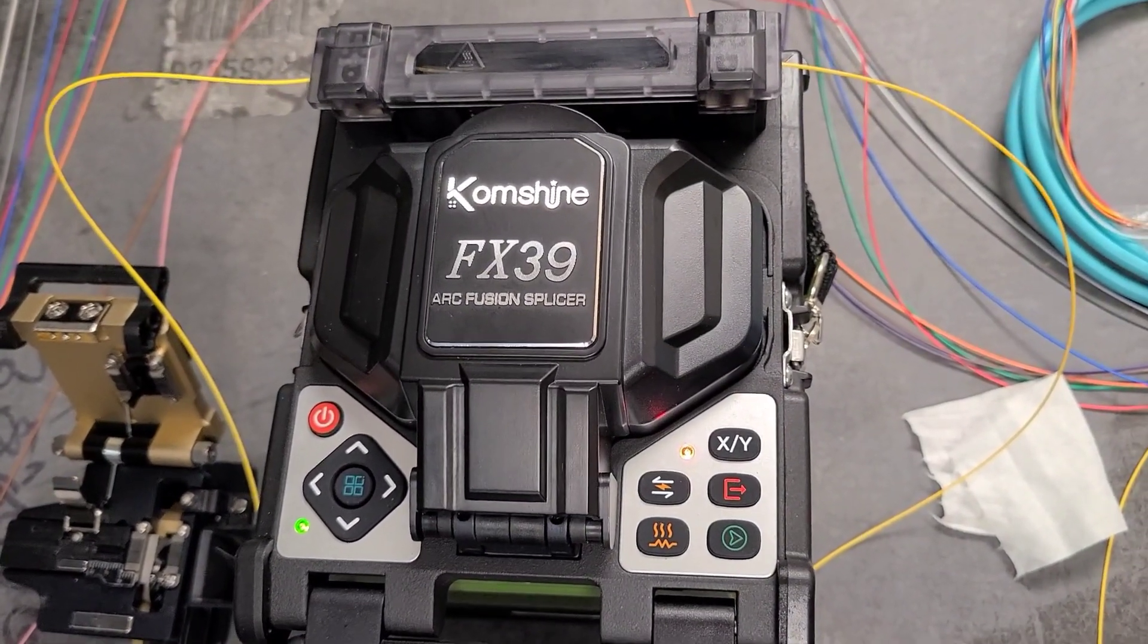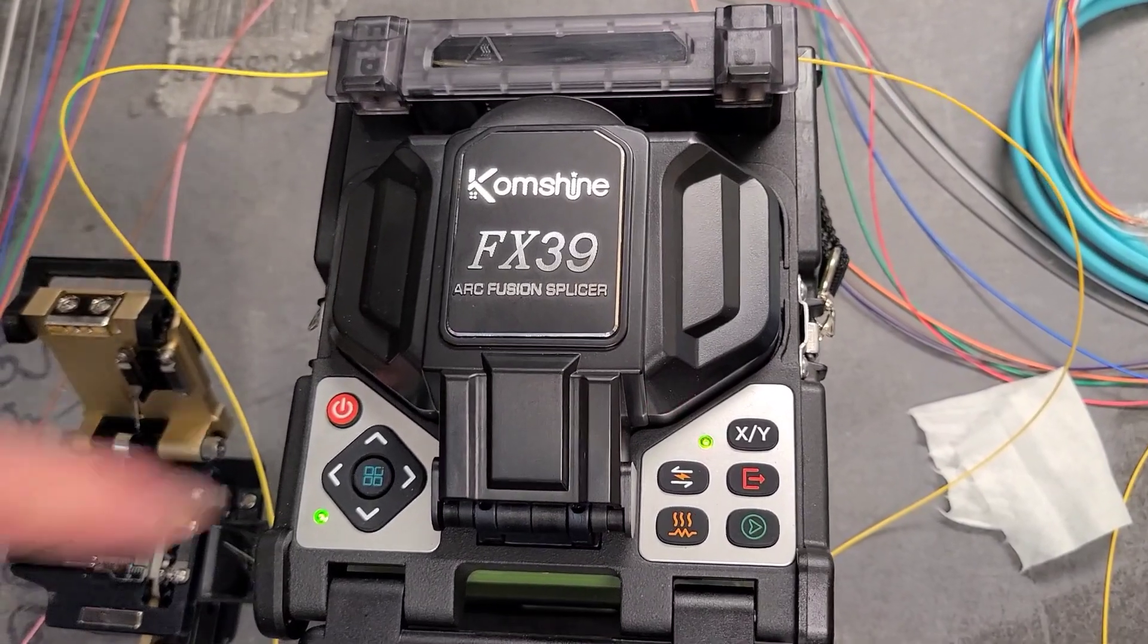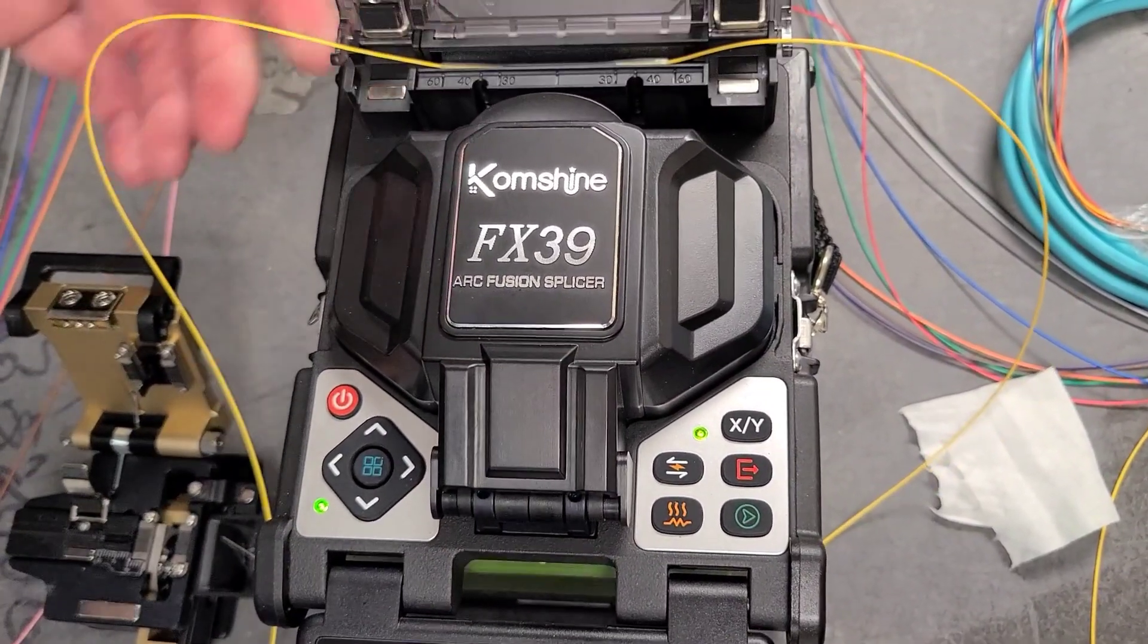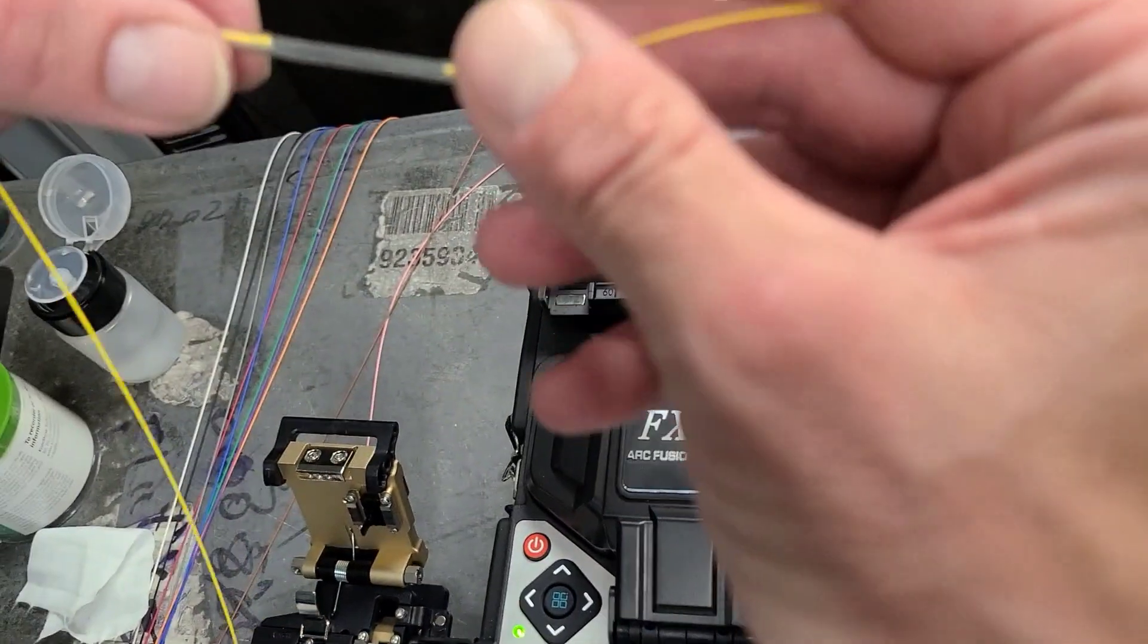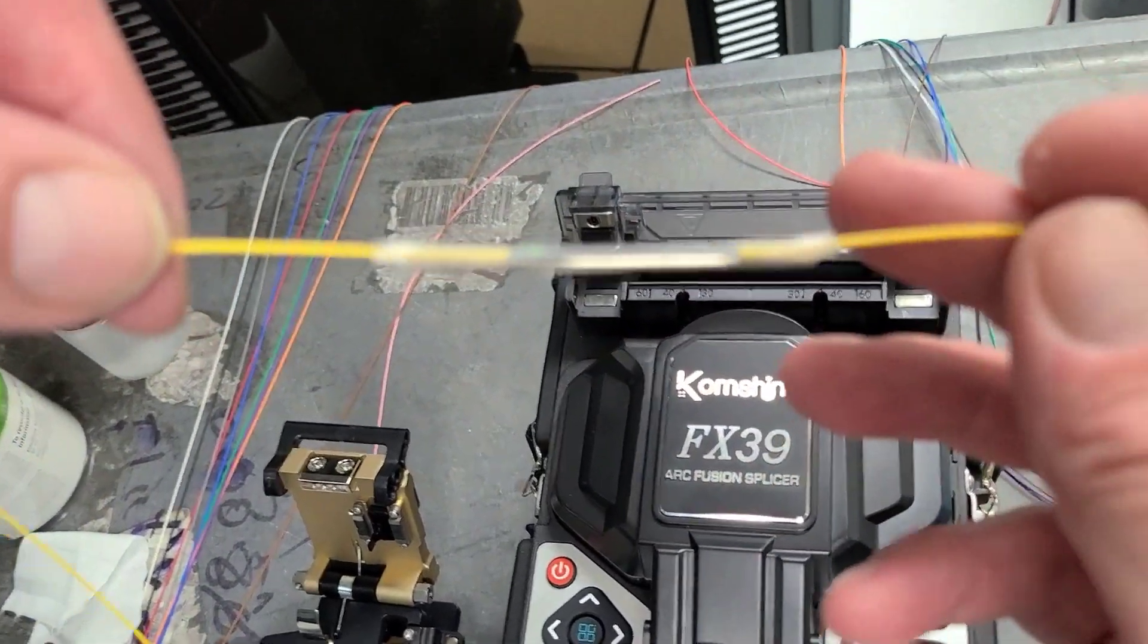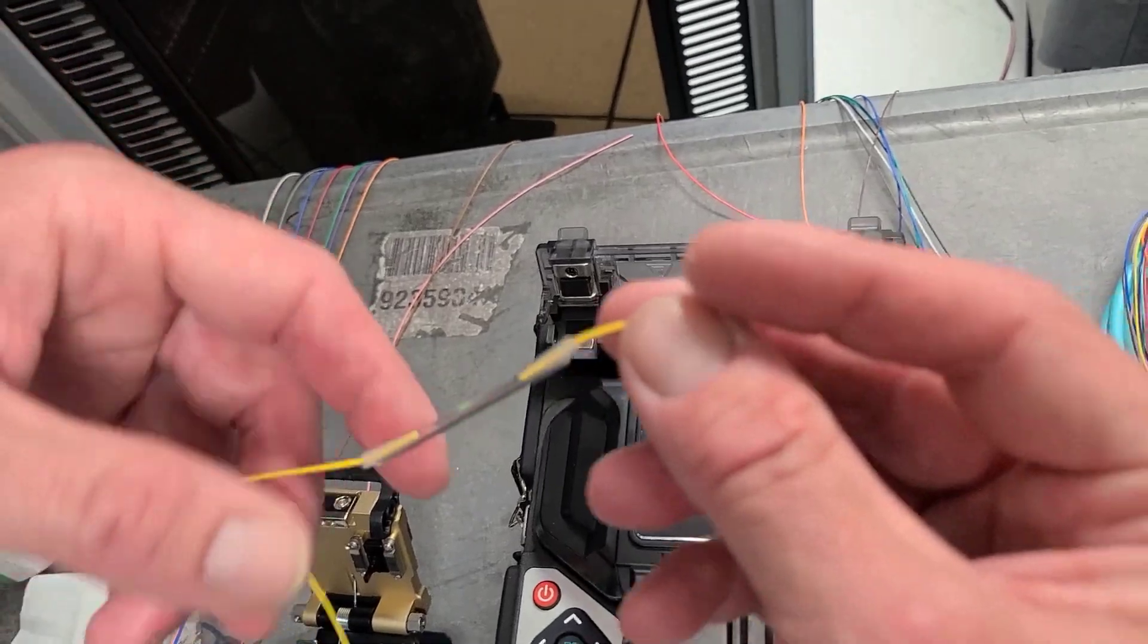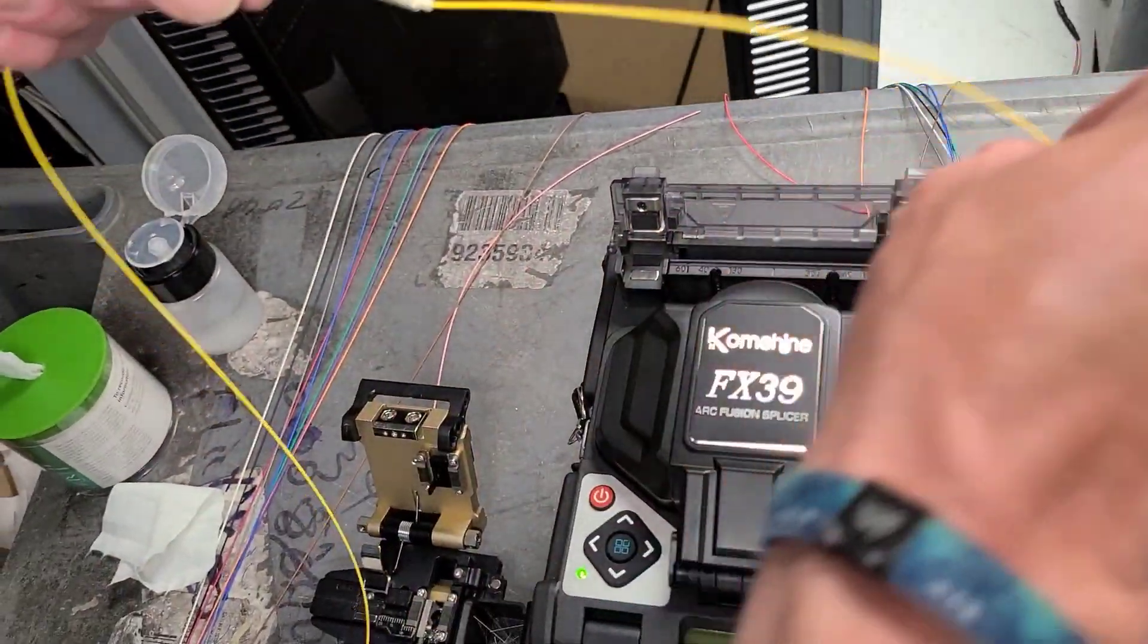And then we just keep doing that over and over again. So as soon as it turns green, you pull it up. And it's still going to be hot to the touch, but you see there's the fiber. You can't really see the fiber inside, but this metal bar is what's going to protect it.